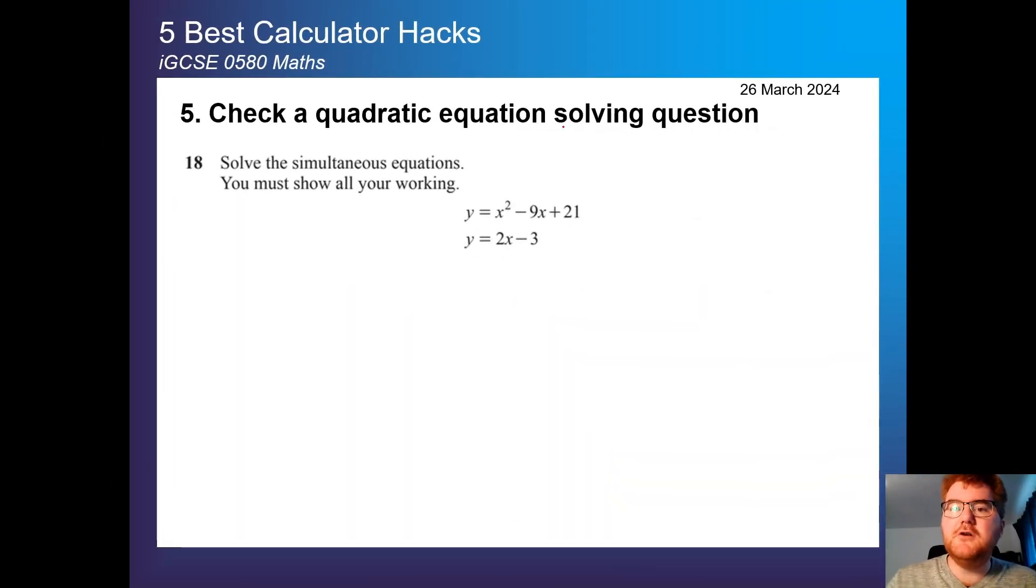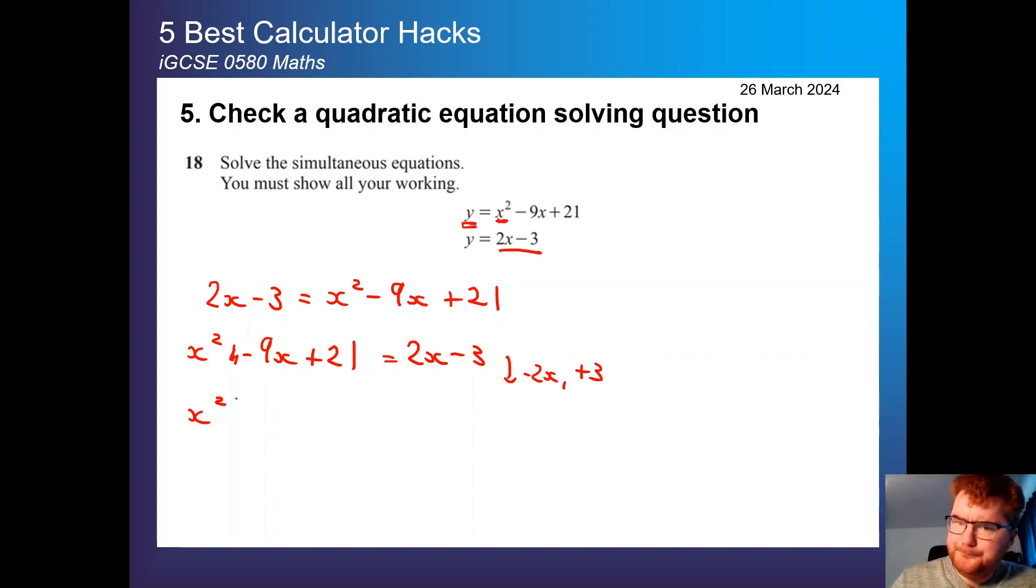Now on to a quadratic equation solving question, and even with the really difficult questions on the paper, it can still help you a lot. So here we need to do it by substitution. I'm not going to go through this in too much detail in this video. So if y equals 2x minus 3, wherever I see a y, I can replace this with 2x minus 3. So I get then 2x minus 3 is equal to x squared minus 9x plus 21. Again, as always, with quadratic equations, we want one side to be 0. So what I've done is flip the equation here. Then I'm going to minus 2x and add 3 on both sides. That gives me x squared minus 11x plus 24 is equal to 0. At this point, I can then go to my calculator and it'll actually solve this for me.